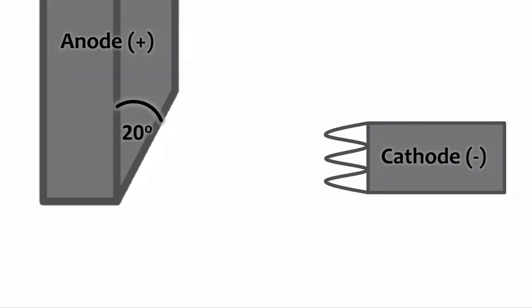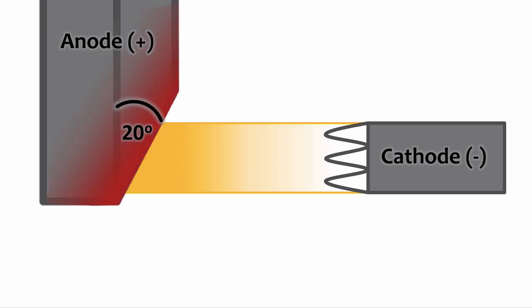Remember that the anode is usually angled between 6 and 20 degrees, and this is a good thing for two main reasons. The anode angle actually increases the surface area of the focal spot, which increases the ability of the anode to absorb heat. Additionally, the angle helps to decrease the effective focal spot size and therefore increases the spatial resolution of the radiograph.